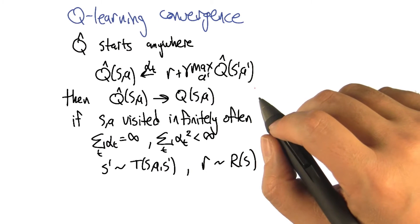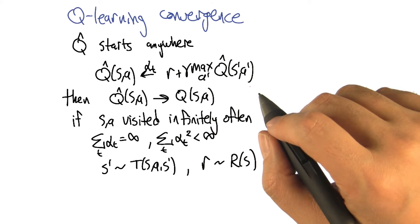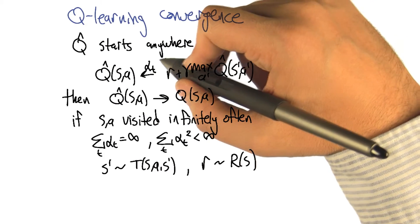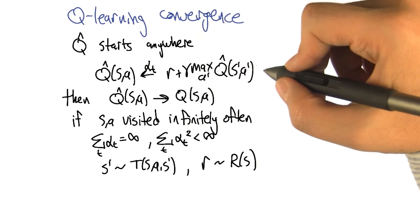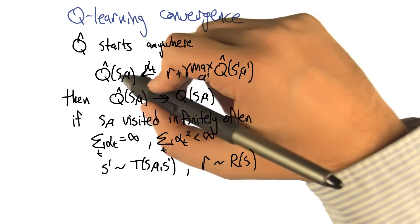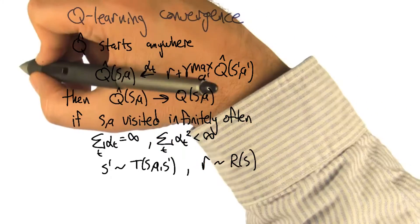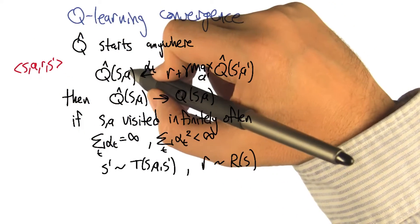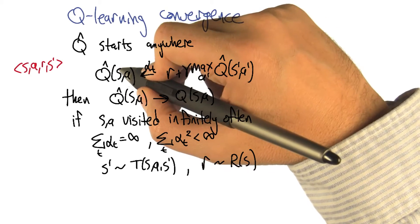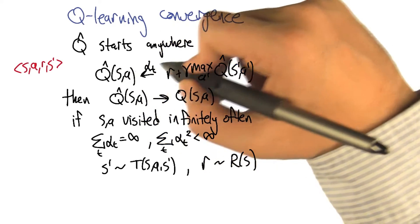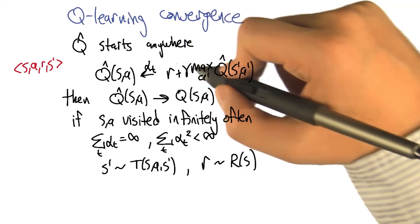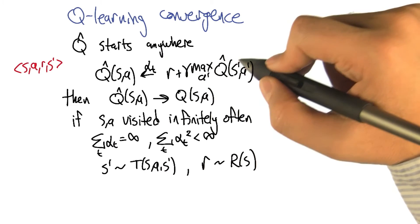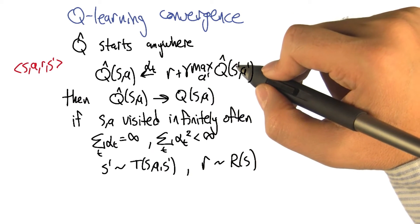So this is a remarkable fact about this Q-learning rule. If we start Q-hat off pretty much anywhere, and then we update it according to the rule that we talked about — for when we see a transition S, A, R, S-prime, then we update S, A, the Q value for S, A — we move it alpha of the way towards R plus gamma max over A of the Q value of the state S-prime.